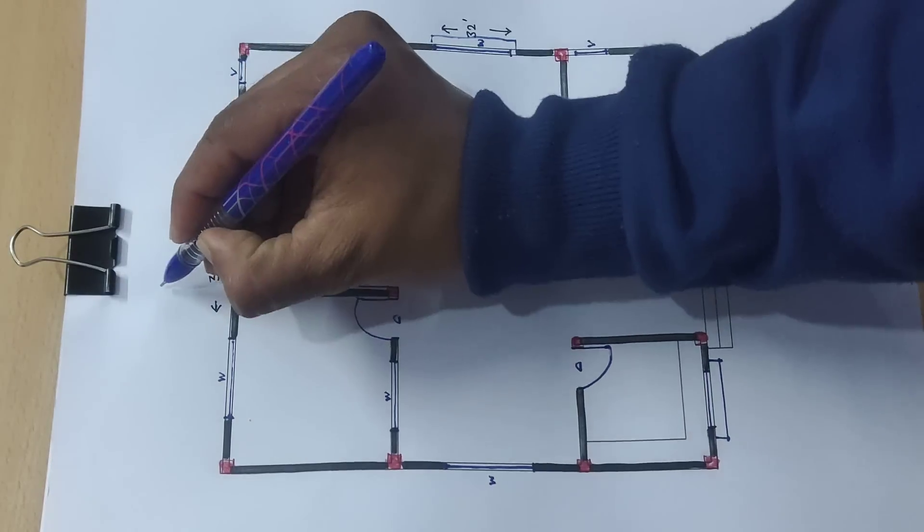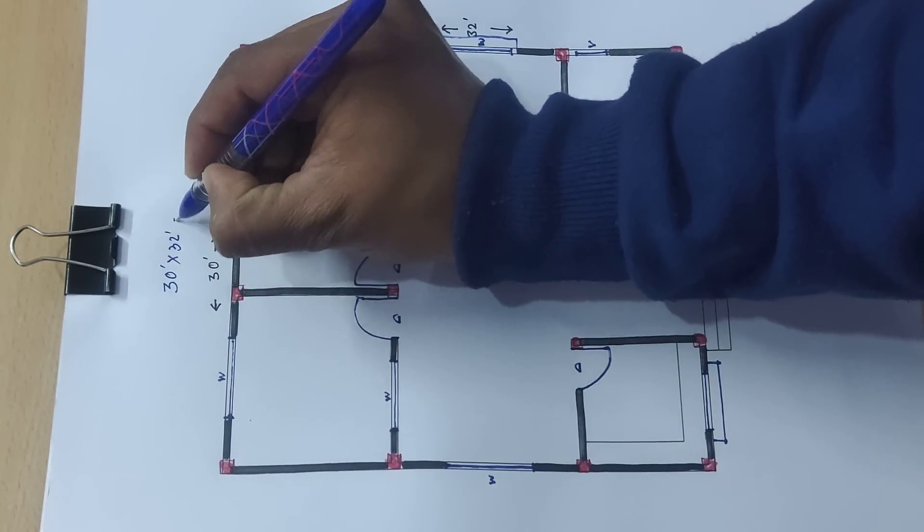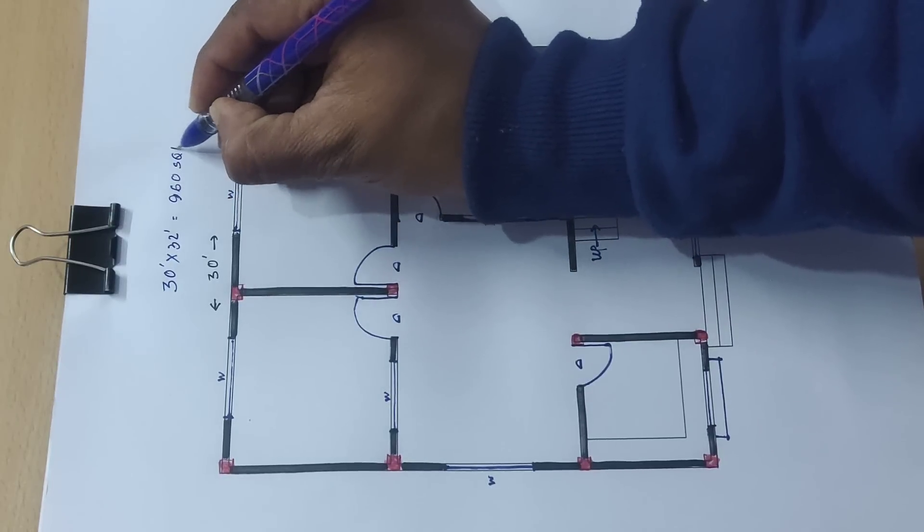Next, 30 feet into 32 feet, 960 square feet.